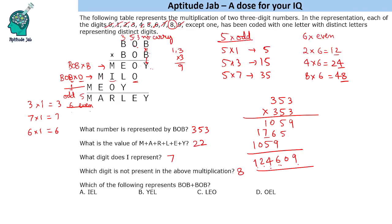And the last one is which of the following is BOB plus BOB. So 353 plus 353 is seven hundred and six. So seven is I and zero is E and then L is six. So IEL is the answer to this. So this is the solution to the set and the answers to the questions.